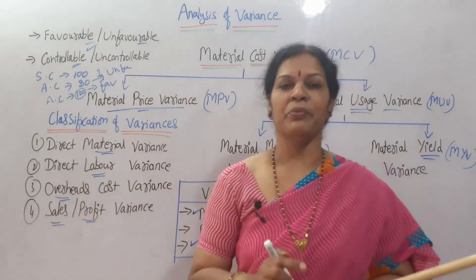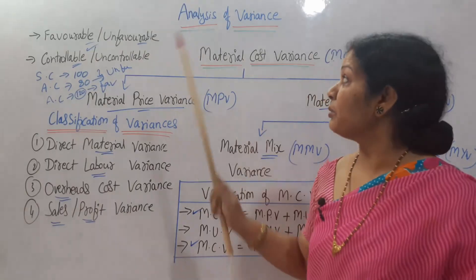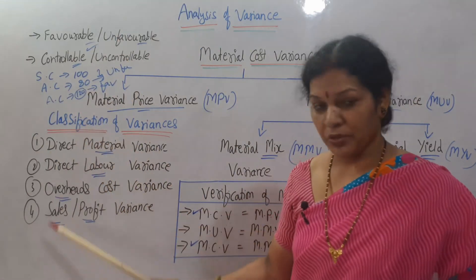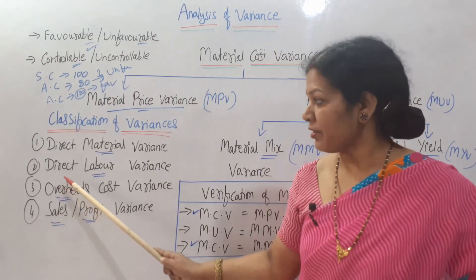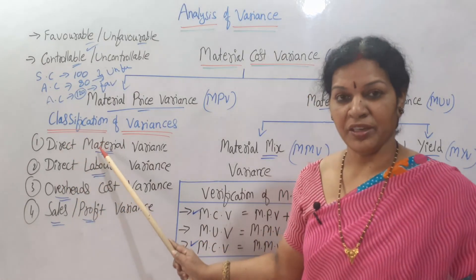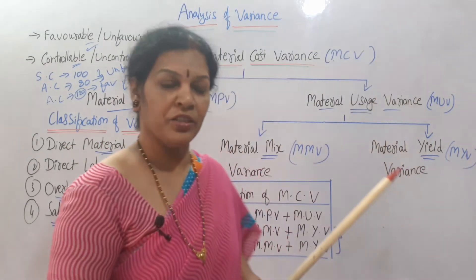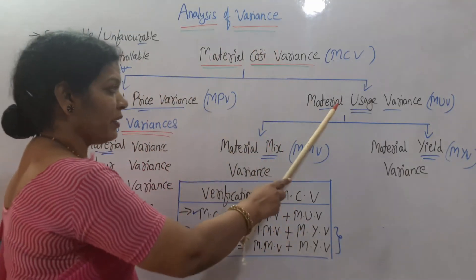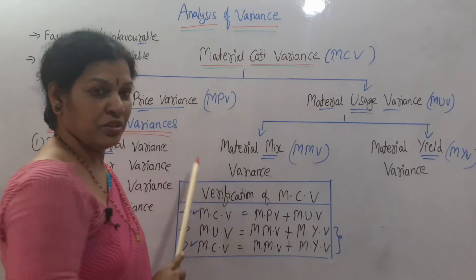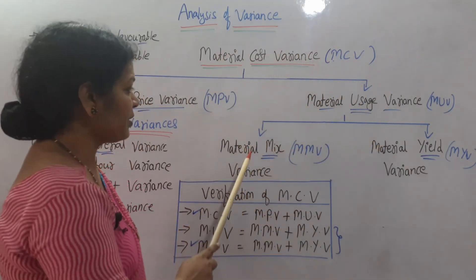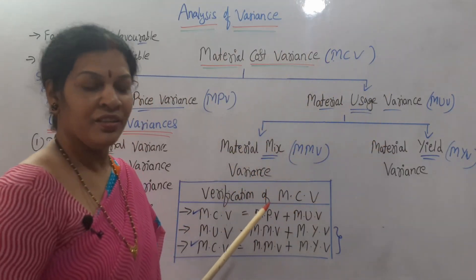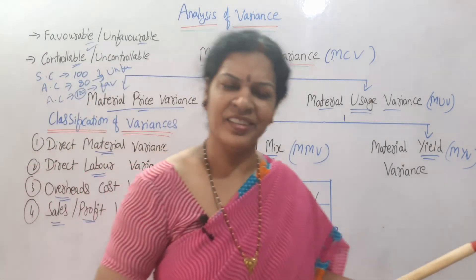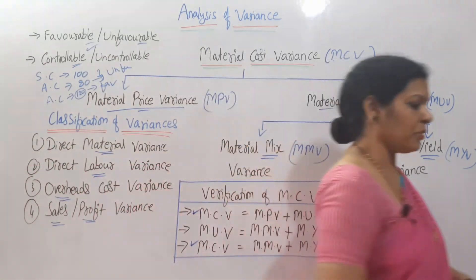Remember: variance analysis is divided into many parts. We are focusing on direct material variance — also called direct material cost variance — which is divided into two parts: material price and material usage. Usage is further divided into material mix and material yield. The verification process is used to check our answers. Take a screenshot or note this down.